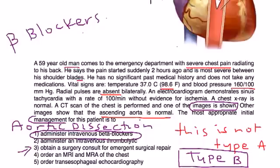This one, number three, would be appropriate if this was a type A aortic dissection.